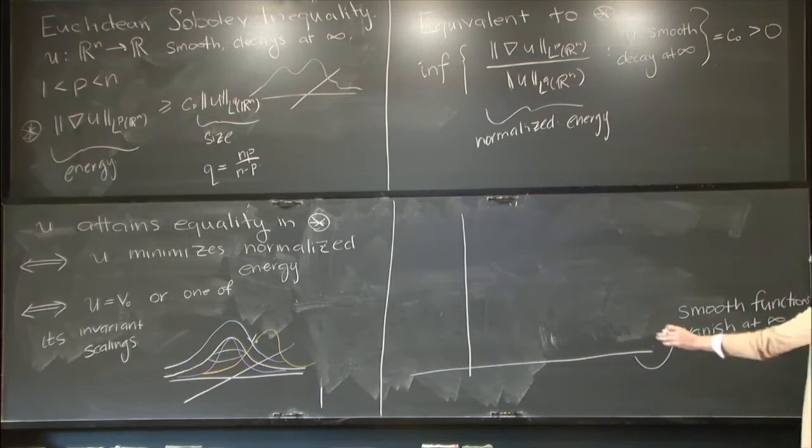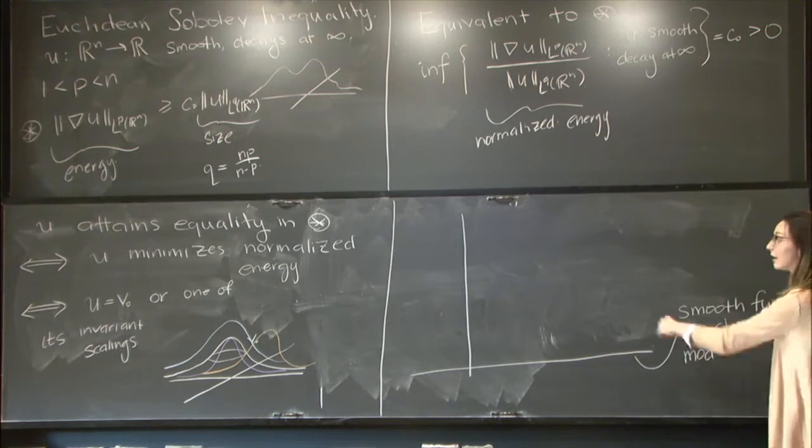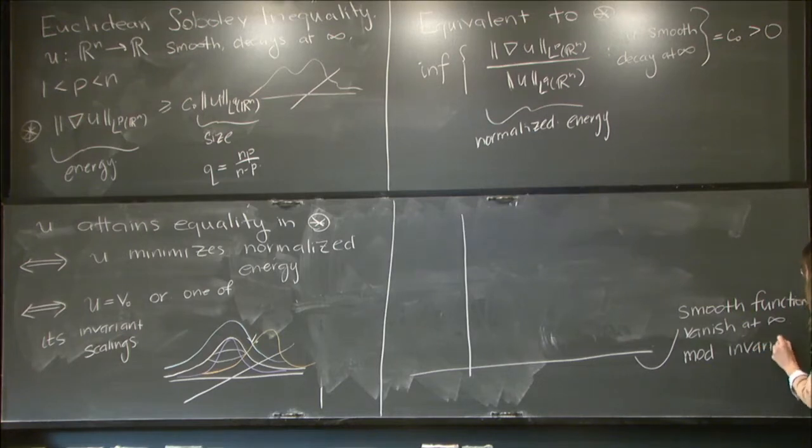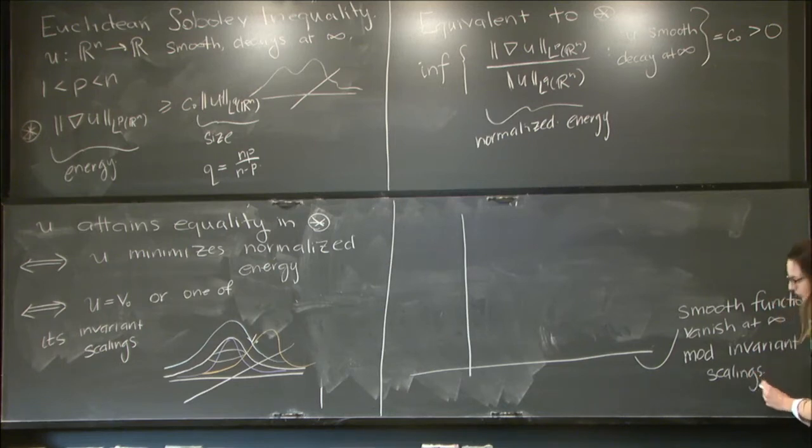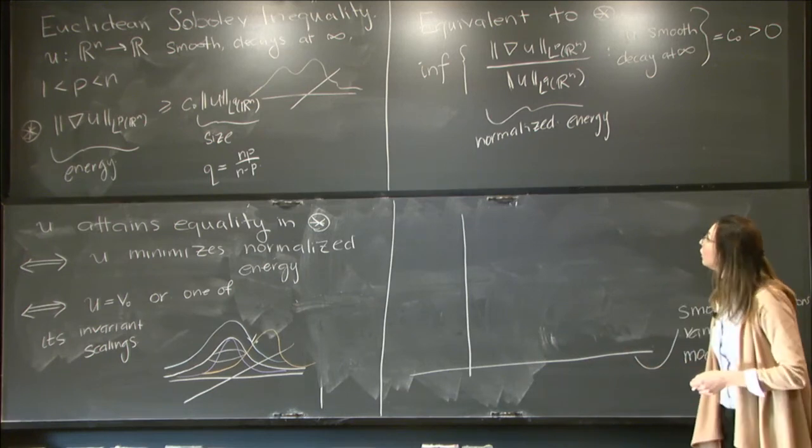And I'll go ahead and look at this space modulo invariant scaling. So these same invariant scalings coming from our inequality. By this I simply mean that we identify two functions which are translations of each other, constant multiples, or dilations.